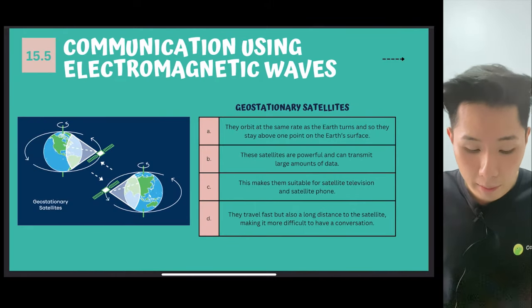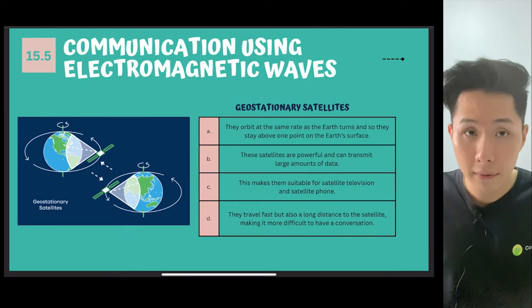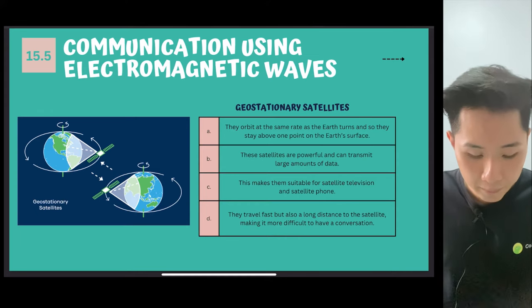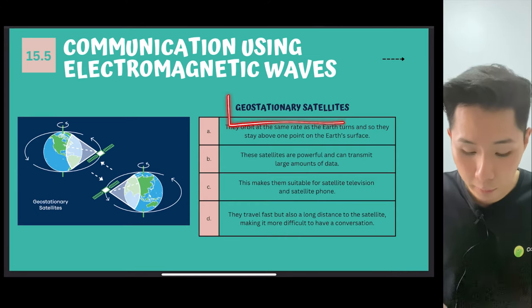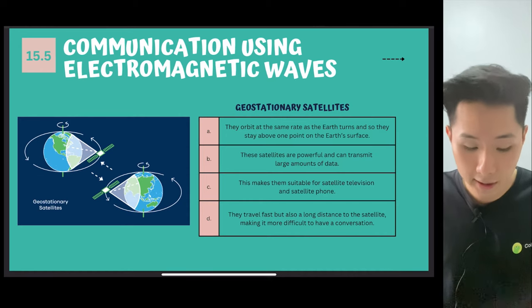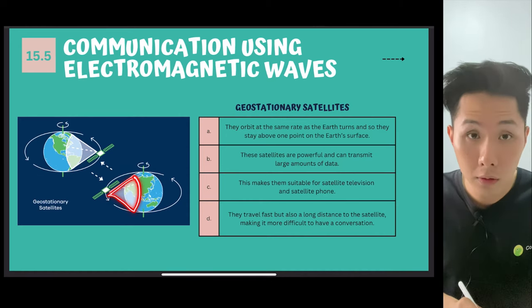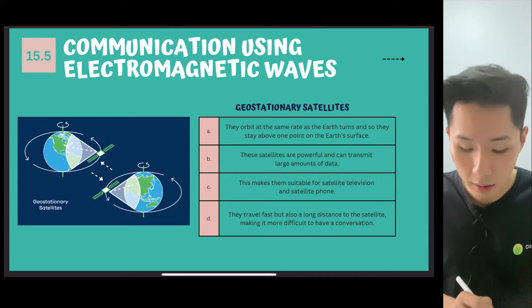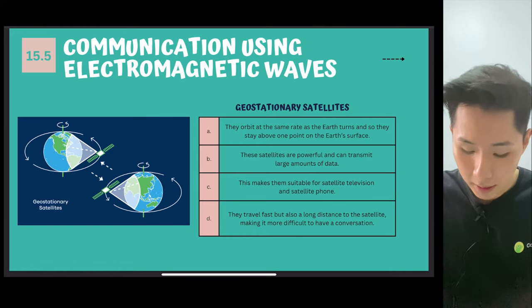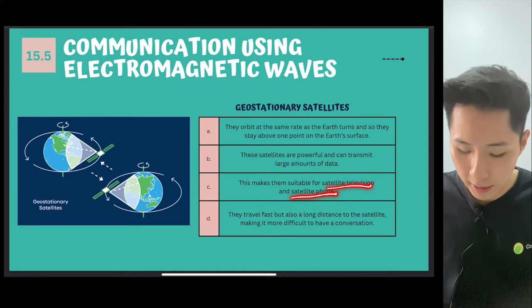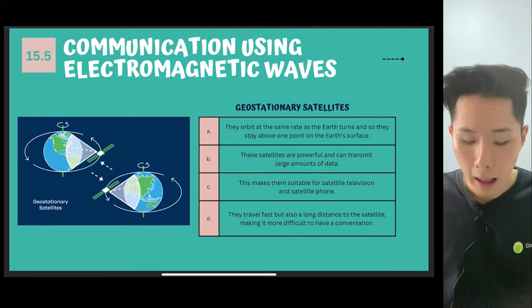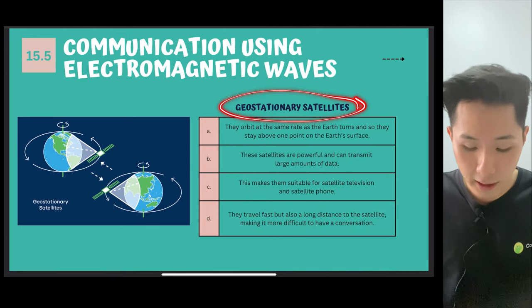So for this chapter specifically, we're going to look into how electromagnetic wave is used for communication. In other words, how they're used to transmit data. So the two satellites, we learned about two different satellites. The geostationary satellites, in which there are types of satellites that can cover a huge area on the earth. And they are located far beyond the earth. They are located very tall. And they are powerful to transmit large amount of data. Make it possible for satellite television and phone. They can travel fast and long distance. But it's very difficult to have a conversation using this type of satellite.